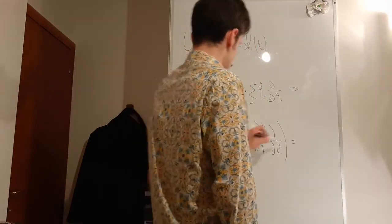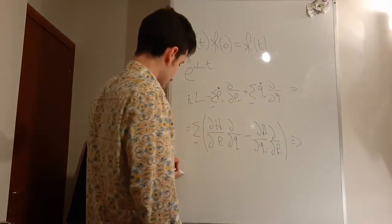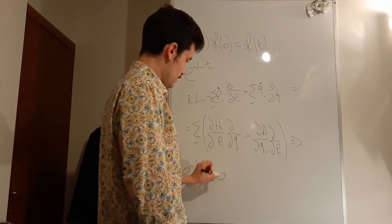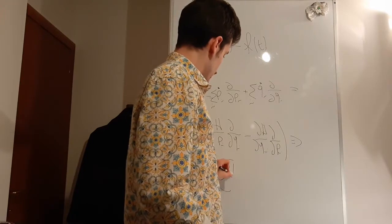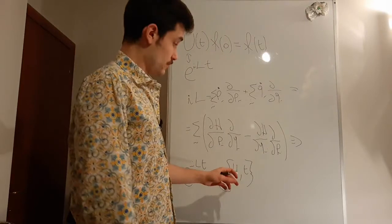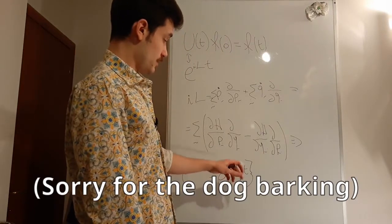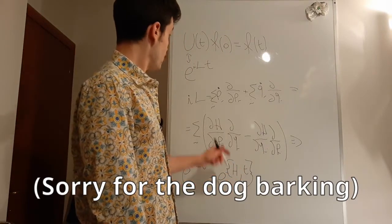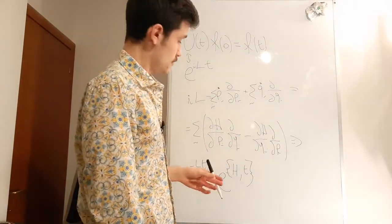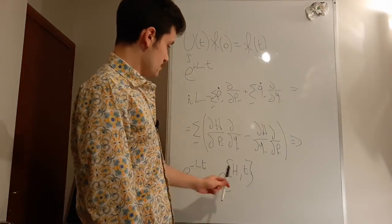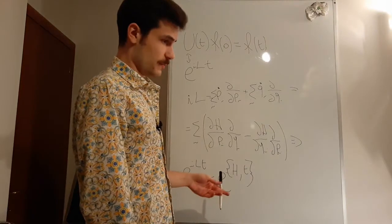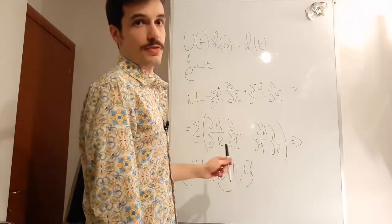Therefore we could say that e to the iLT is nothing more than e to the Poisson bracket between the Hamiltonian and time. So if the Hamiltonian commutes with time in the Poisson bracket, we'll have a constant function. In general, our system will be time independent. That's interesting to see, because it's quite similar to what you see in quantum mechanics, in the quantum mechanical Liouville theorem.